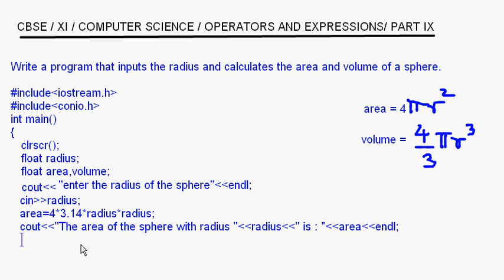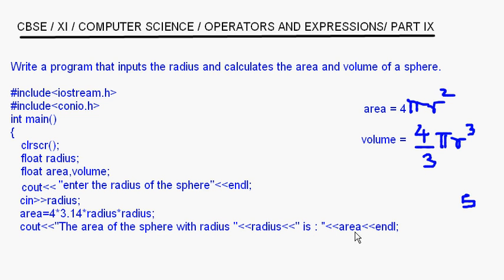So this will print the string "the area of the sphere with radius" and after that, whatever value is inside the variable radius will come. Supposing the user has entered radius as 5, it will print "the area of the sphere with radius 5 is" and then the area we calculated.